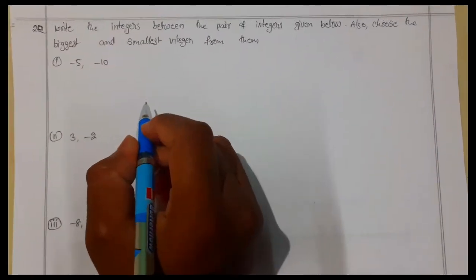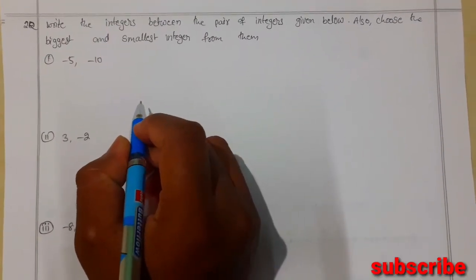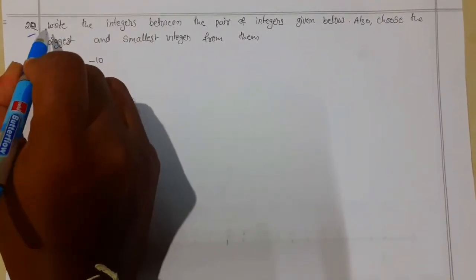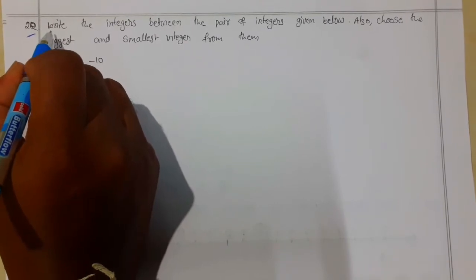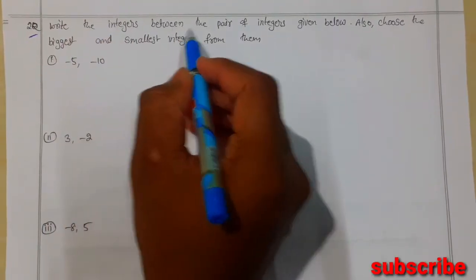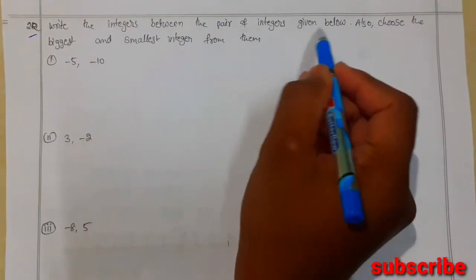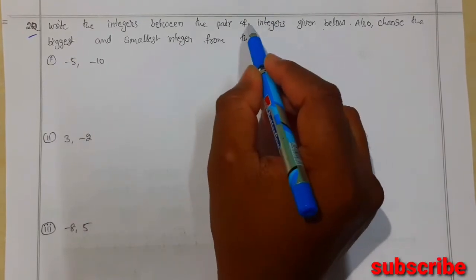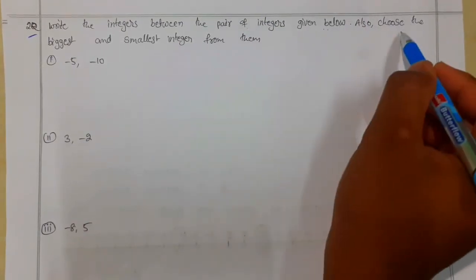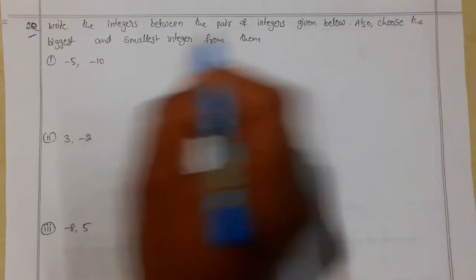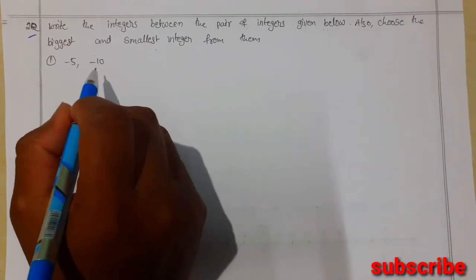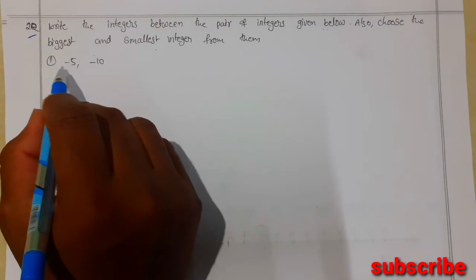Hi students, welcome to JSMS Academy. Today we are going to discuss the second problem of Exercise 1.1 of Integers. The question says: write the integers between the pair of integers given below, and also choose the biggest and smallest integer from them.